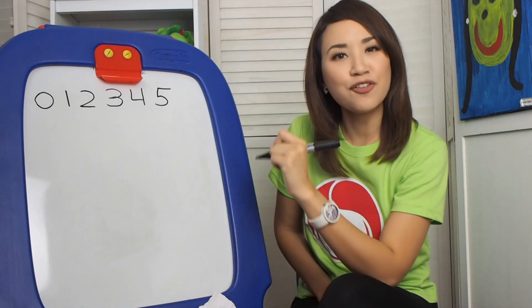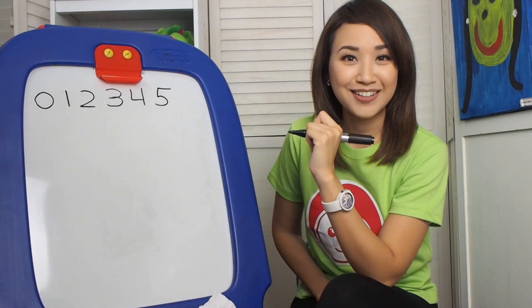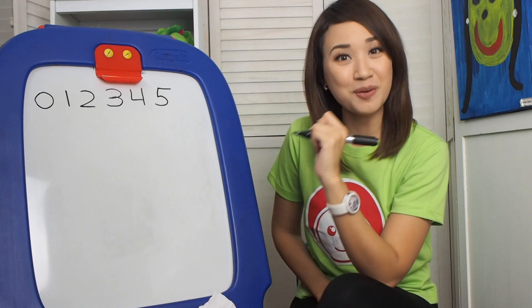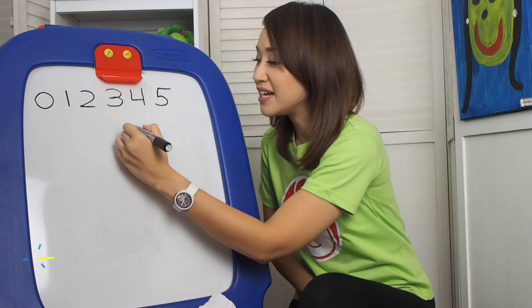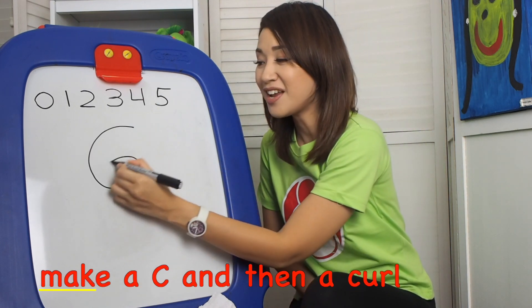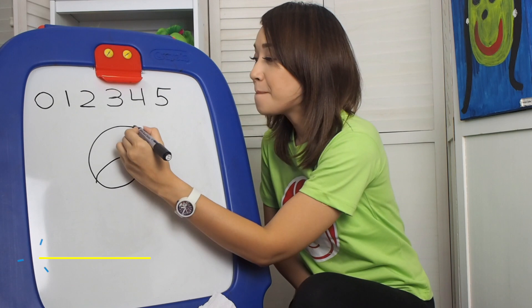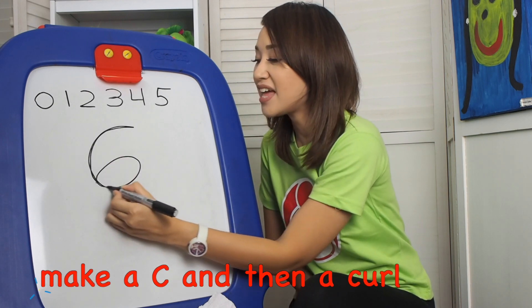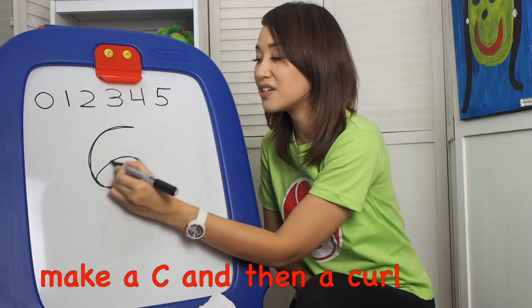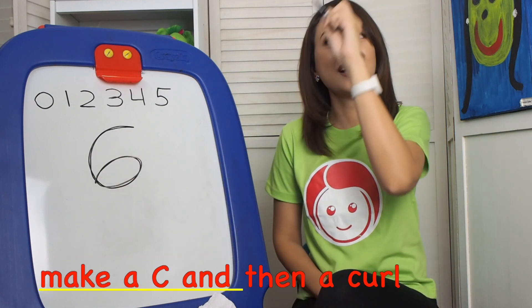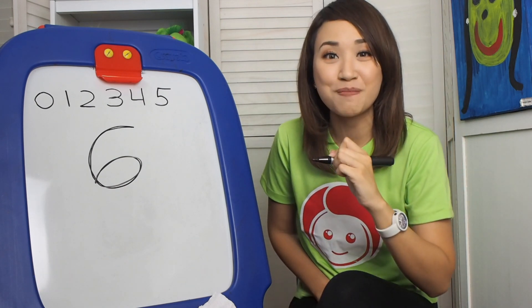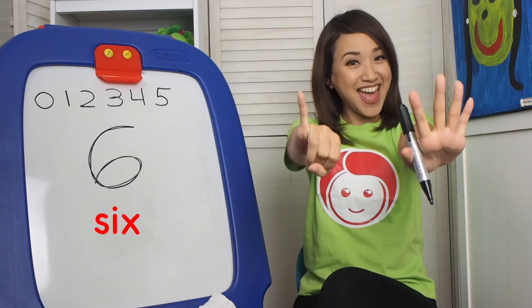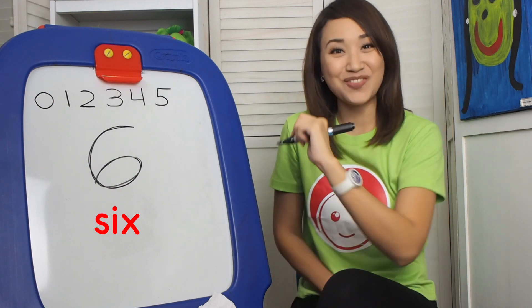What is after number 5? Good job! Number 6. So how do we write number 6? Make a C and then a curl. Make a C and then a curl to make the number 6. Very good!